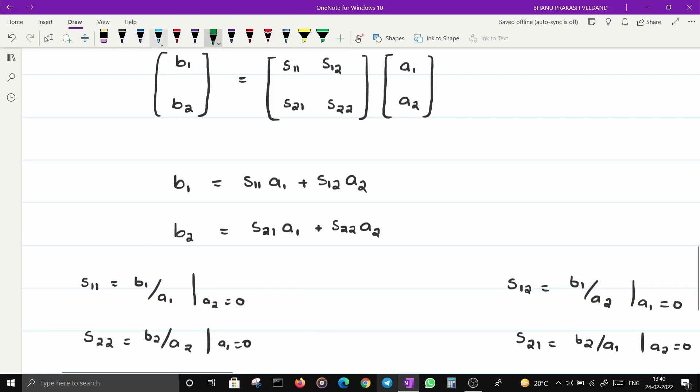S11 is B1/A1 when A2 equals zero. If I put A2 equal to zero, this becomes B1/A1. Similarly, S22 will become B2/A2 when A1 becomes zero.